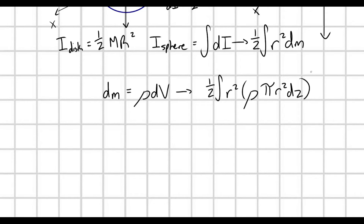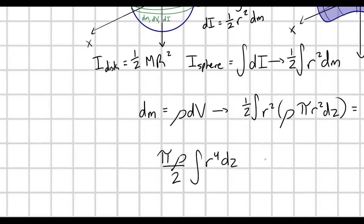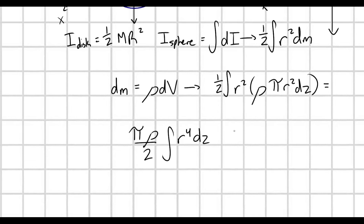So performing these substitutions: we have ½ times the integral of r² times ρ dv, where dv is π r² dz. Taking π and ρ out of the integral as constants — since ρ is constant due to uniform mass density — we get (πρ/2) times the integral of r⁴ dz. So we have this little r here, and we want to integrate with respect to z — we're very close but need to think a bit more.